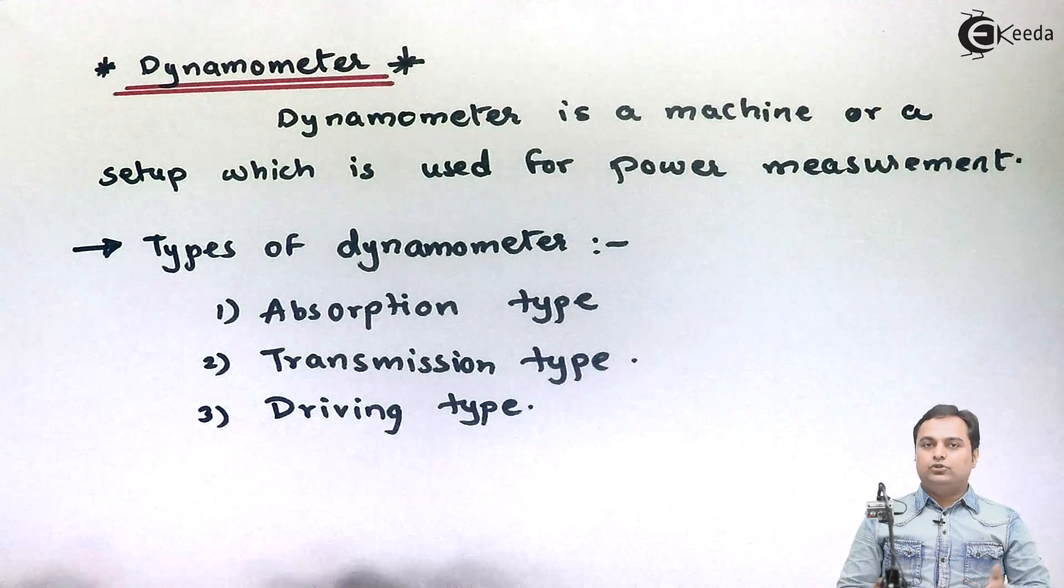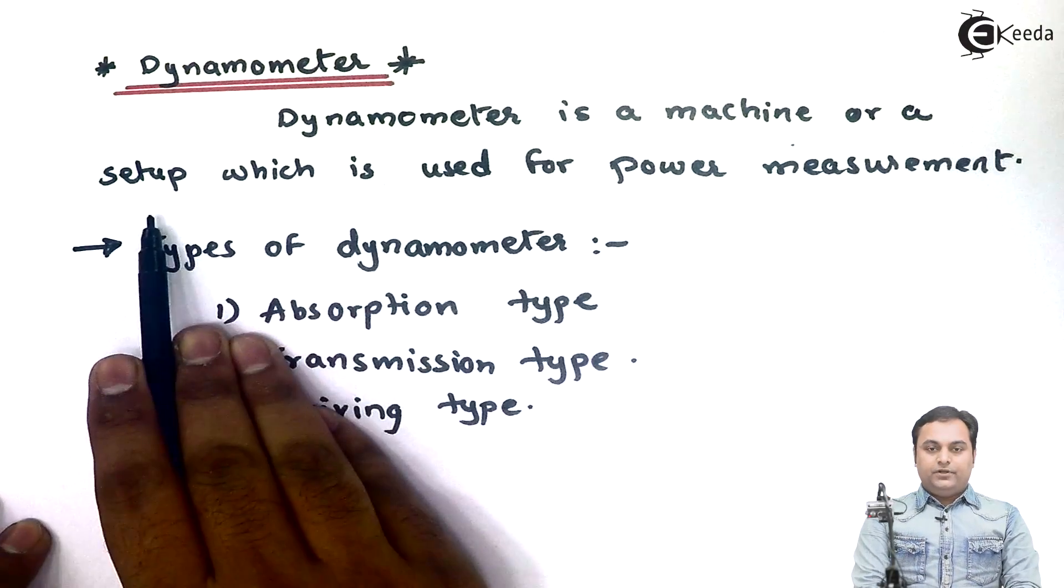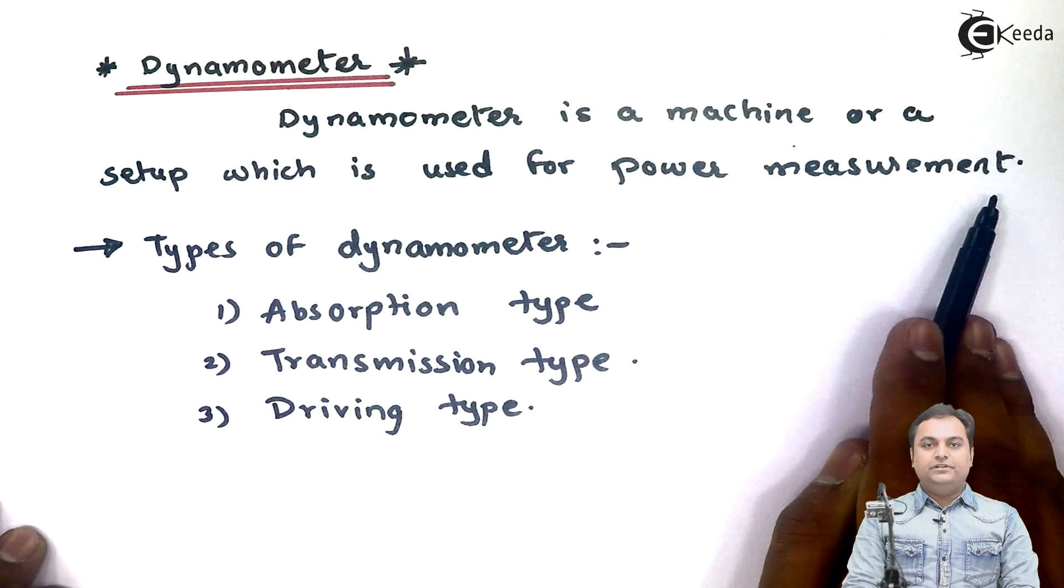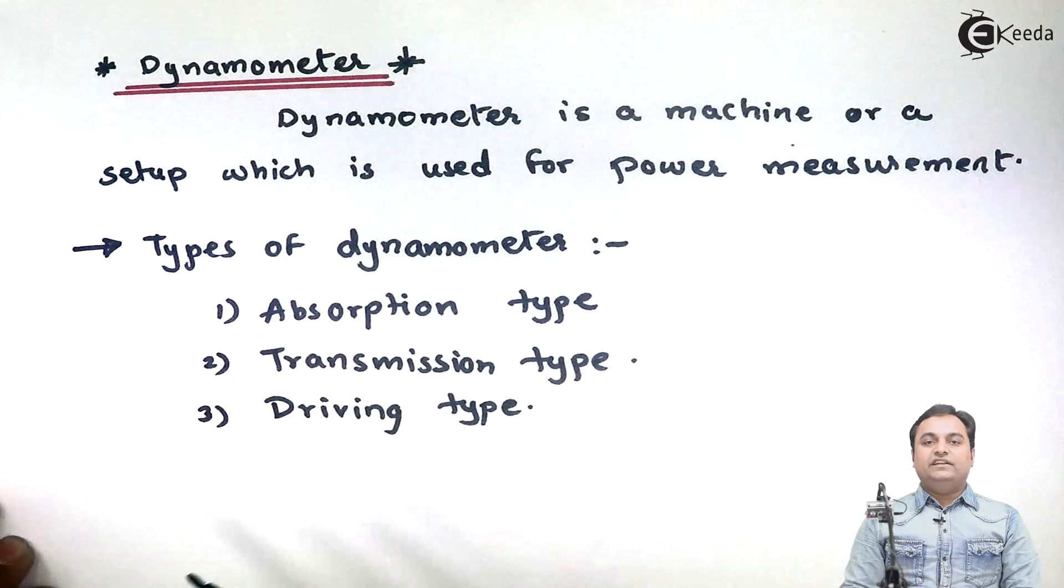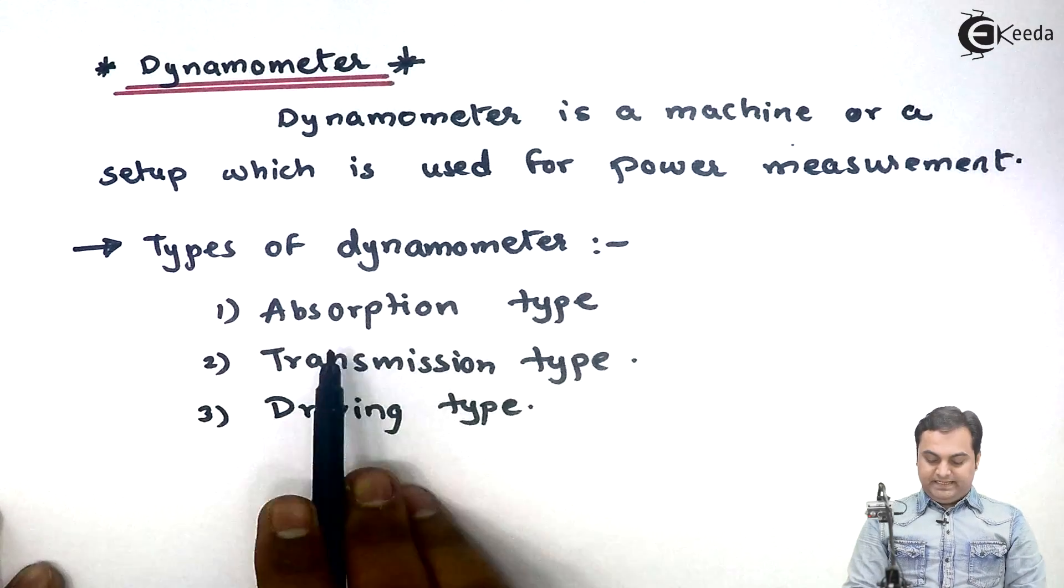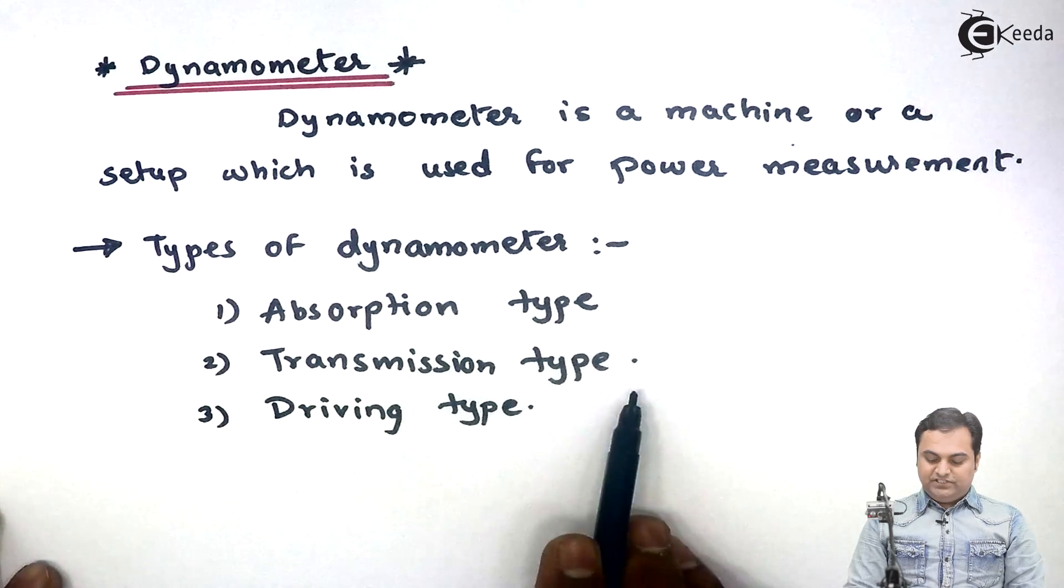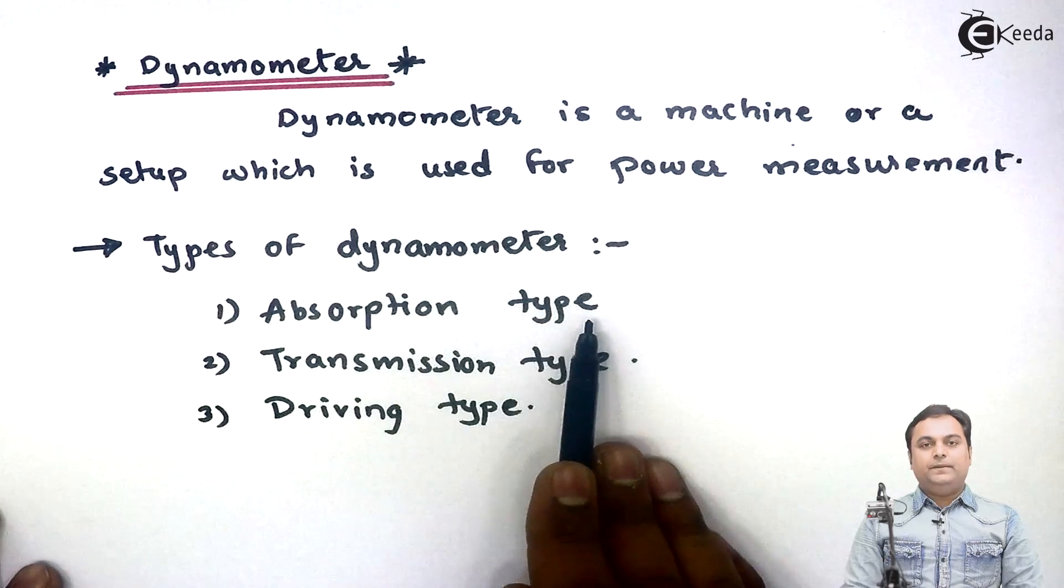Here I have written the definition. Dynamometer is a machine or a setup which is used for power measurement. When we talk about power, we can also say it is torque measurement. Types of dynamometers are absorption type, transmission type, and driving type.